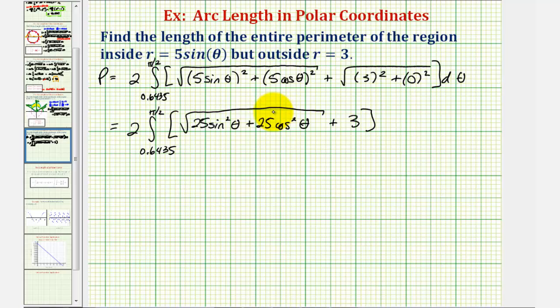Now looking at these two terms here, we factor out 25, we'd have 25 times the quantity sine squared theta plus cosine squared theta. We should recognize this would be one. So this simplifies to the square root of 25, which equals five.